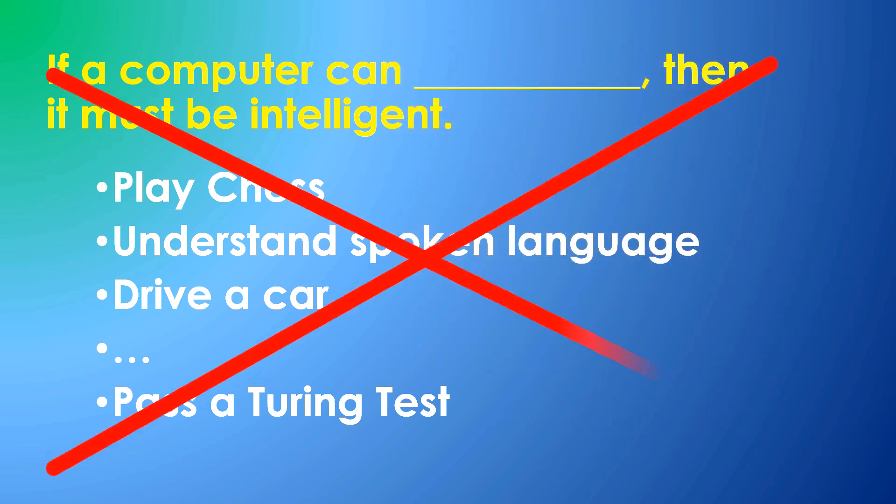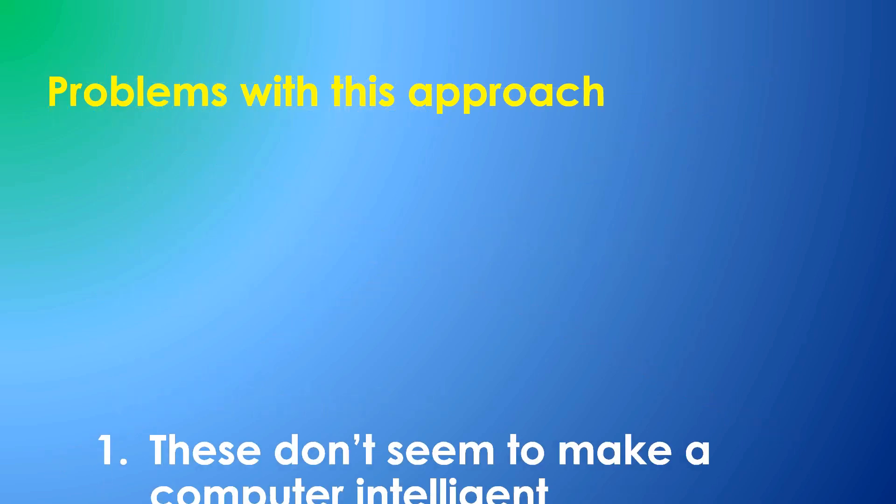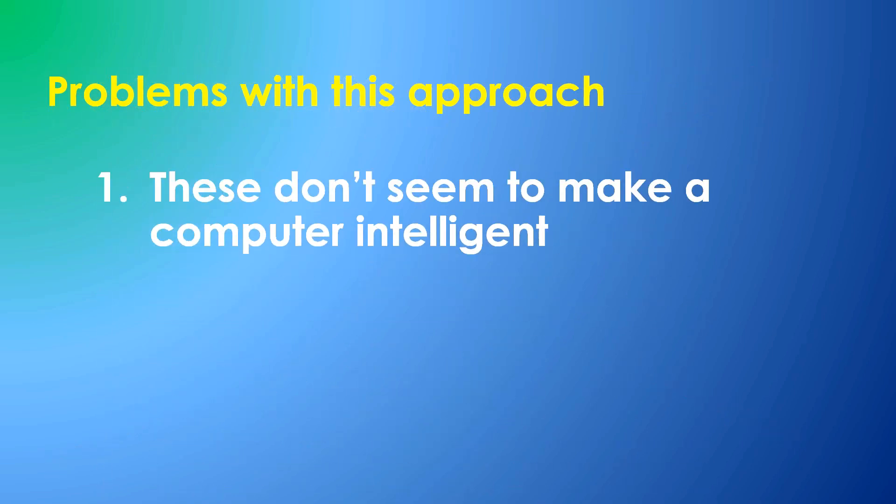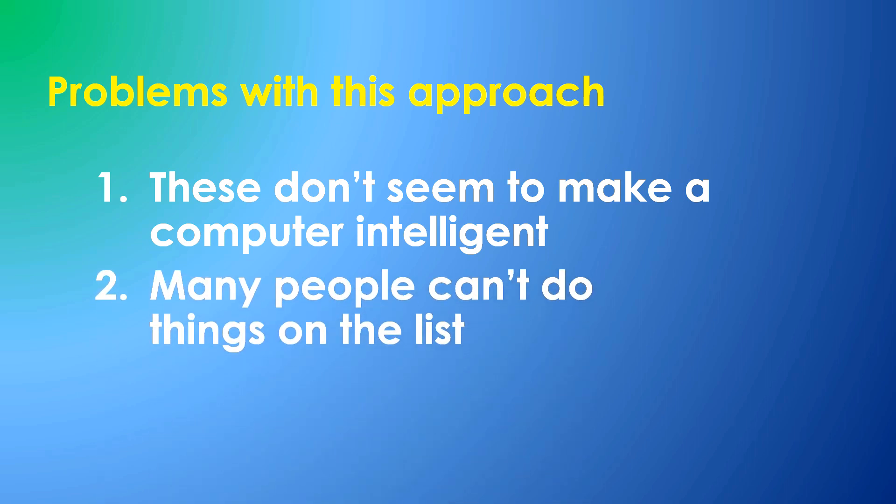There are problems with any such list. First, being able to do the things on the list ultimately doesn't seem to make computers generally intelligent. Secondly, no matter what actions you choose to put on the list, there will be perfectly intelligent people who can't do them. For example, I can't play chess, but I think I'm intelligent.